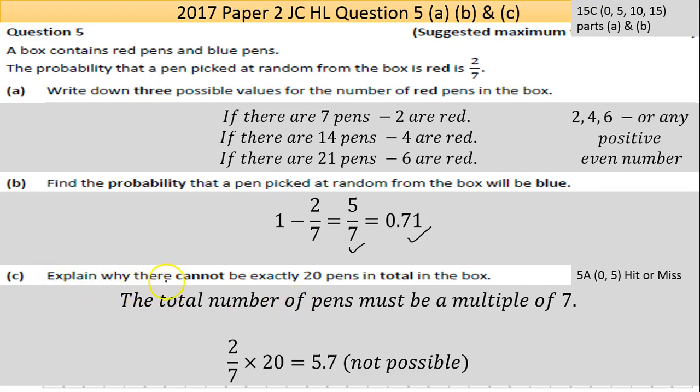It says explain why there cannot be exactly 20 pens in total in the box. If there's 20 pens in the box that would mean there's a little less than six pens based on the probability. Again you can't have half a pen. It's either five pens or six pens or seven pens. So the total number of pens must be a multiple of 7.